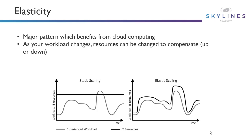You can see that solid black line on the right-hand side — this comes from the cloud computing patterns website. That black line goes up and down in response to the workload. It's still above the lighter gray line because we still want to make sure that the workload has enough resources for those peaks and we don't have any performance issues.